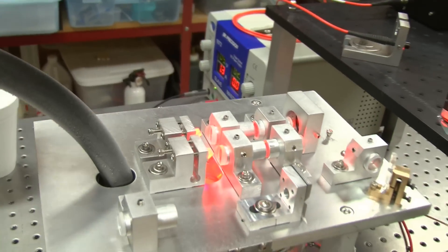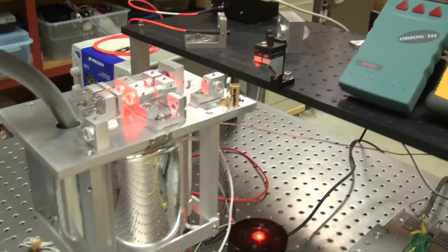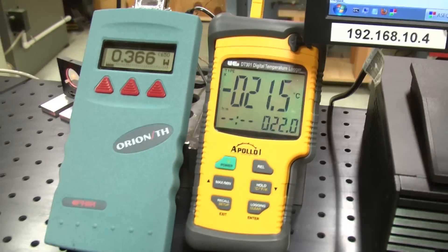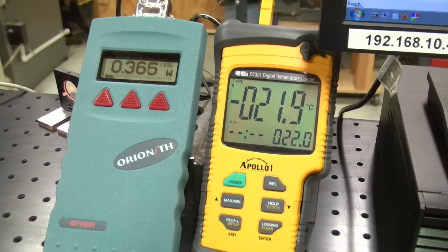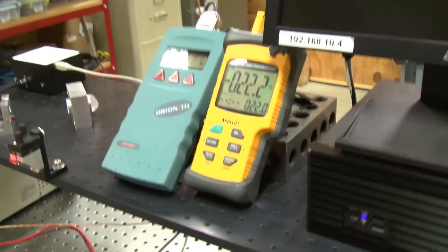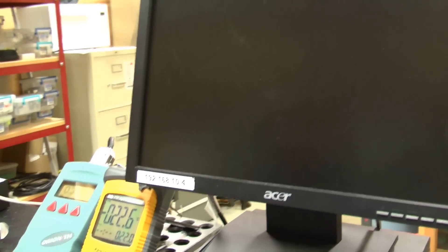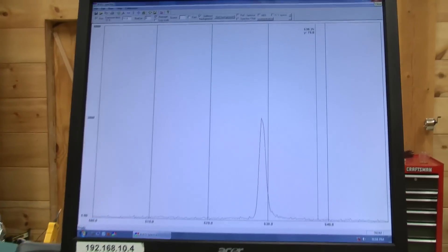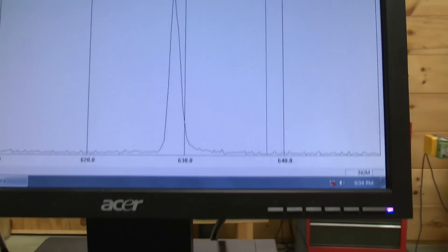It's right now running just a little bit red of 630 nanometers. We are going to lower the temperature even further. Minus 20 degrees, and we are at 365 milliwatts. Power continues to rise and the wavelength continues to shift blue.